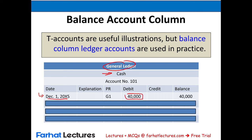Transaction 13: Farhat Lectures paid $3,600 cash for a 36-month insurance policy with coverage starting December 1st. This is a prepayment — cash goes down and prepaid insurance, an asset, goes up. Journal entry: debit prepaid insurance $3,600, credit cash $3,600. Every month, this account will decrease by $100 ($3,600 ÷ 36 months). I'm planting the seed for future adjustments.